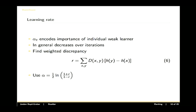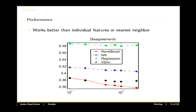So what is this alpha? Alpha encodes the importance of an individual weak ranker and, in general, decreases over iteration, just like binary boosting. You can compute a quantity called the discrepancy that basically says how wrong are you getting things, and then that becomes your alpha value. This is very much like the error epsilon that we had before, but translated to rankings. As R gets smaller, the weak learner will have a lower weight. This works better than individual features or nearest neighbors, and this is discussed a little bit more in the book.